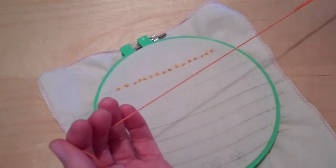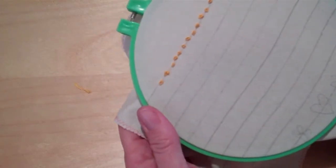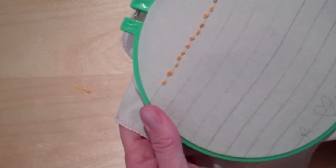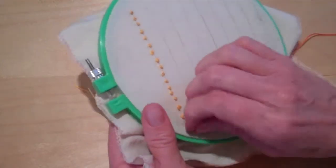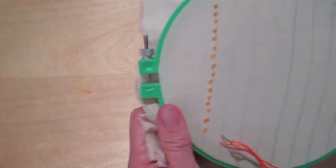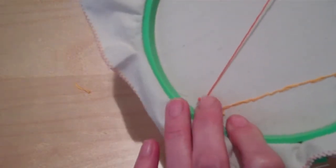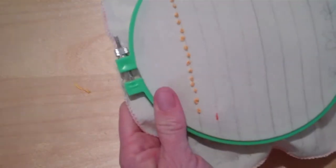So I have my thread here with the knot on the end. If you're right-handed, you always work left to right. So I'm going to come up on my line, and then I'm going to go down. And I'm feeling with my finger on the back here that I'm not getting any knots or funny loops.